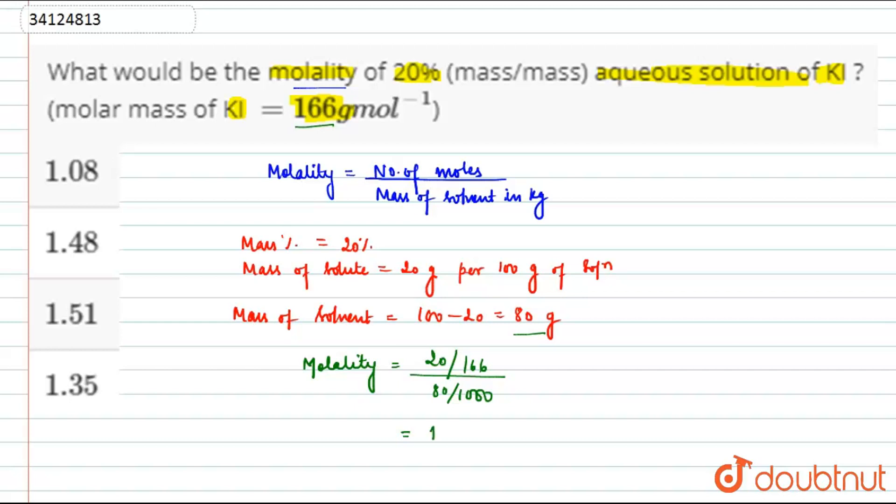The molality will come out to be 1.51. Here is option C. This will be the correct option.